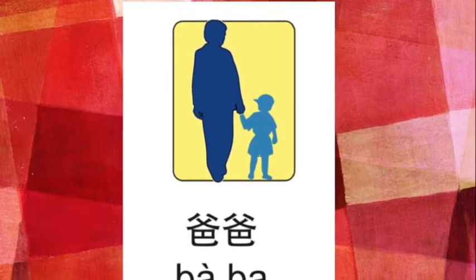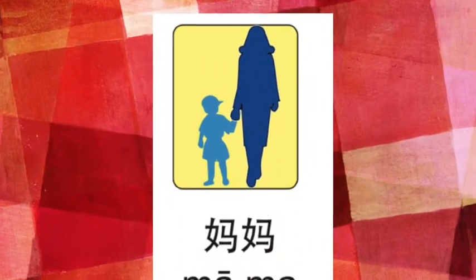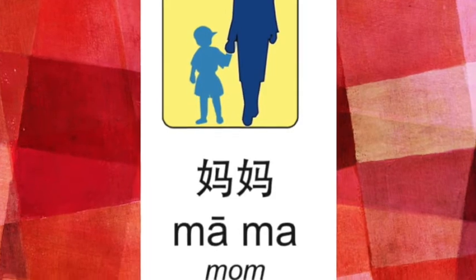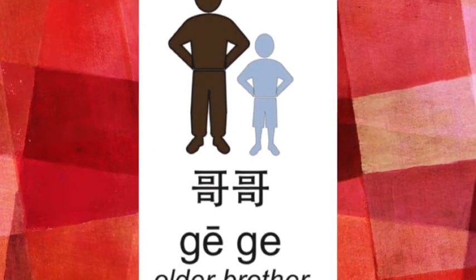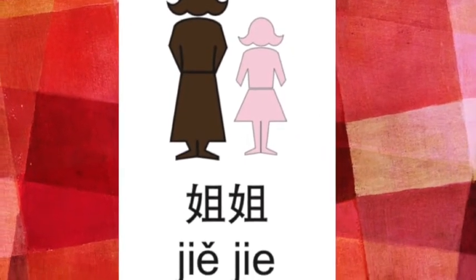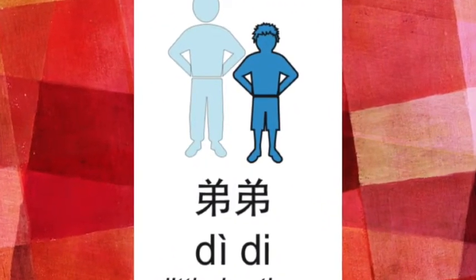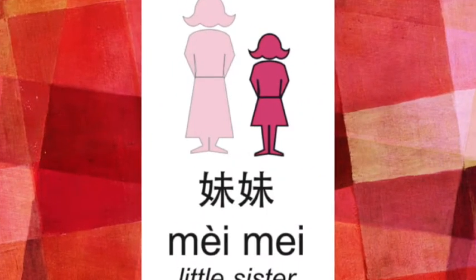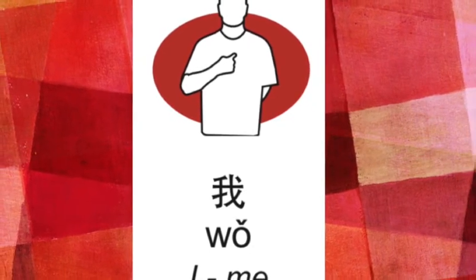Let's kick off with all the new words. 第一个 — first one — 爸爸. 第二个 — second one — 妈妈. 第三个 — third one — 哥哥. 第四个 — number four — 姐姐. 第五个 — 弟弟. 第六个 — number six — 妹妹. 第七个 — number seven — 我.